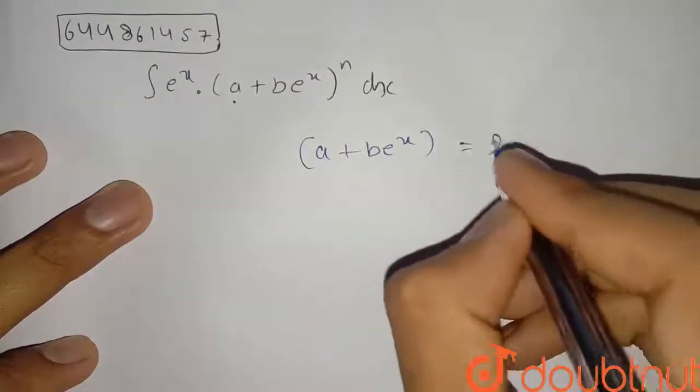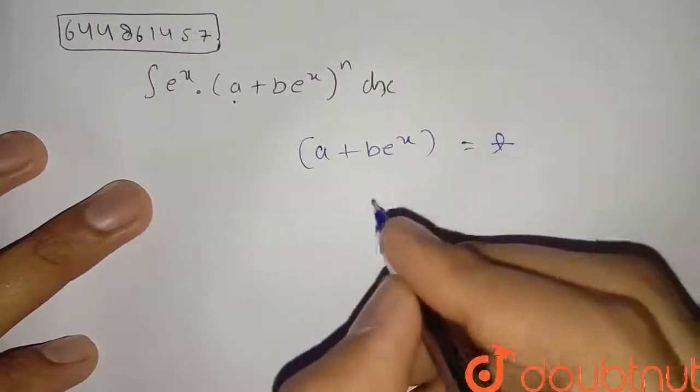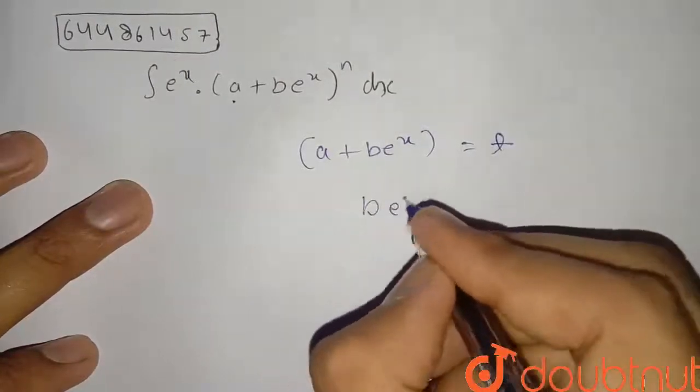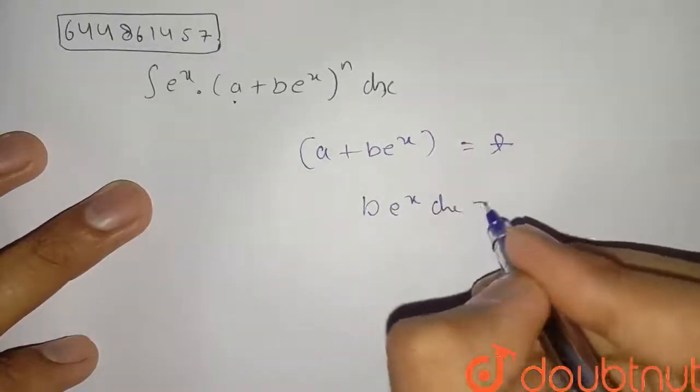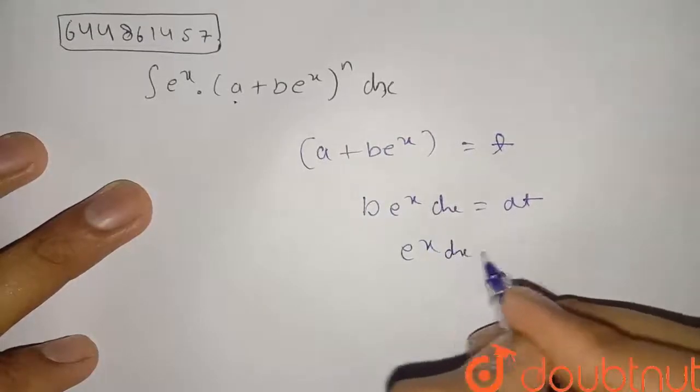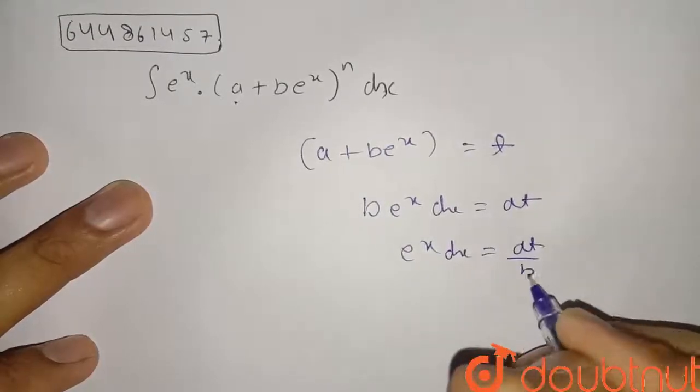So if I put this equal to t and I differentiate both sides, it will be b into e raised to x, a is constant so 0, and dx is equal to dt. Now e raised to x dx will be dt upon b.